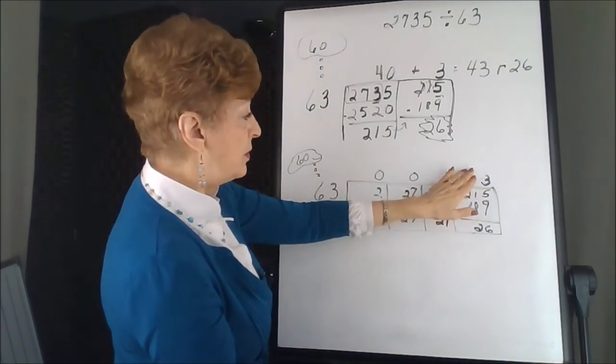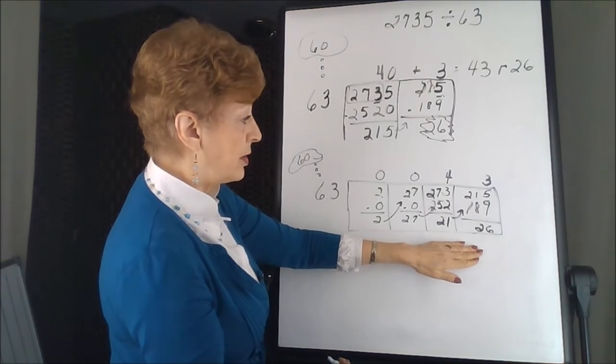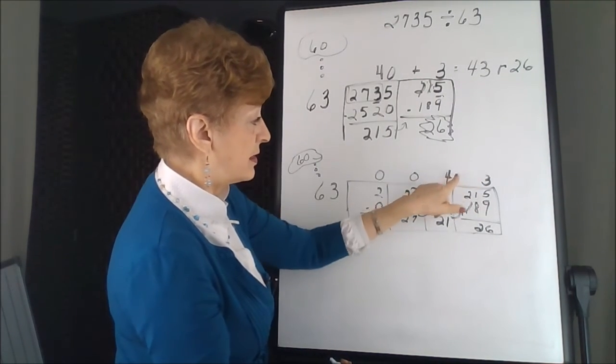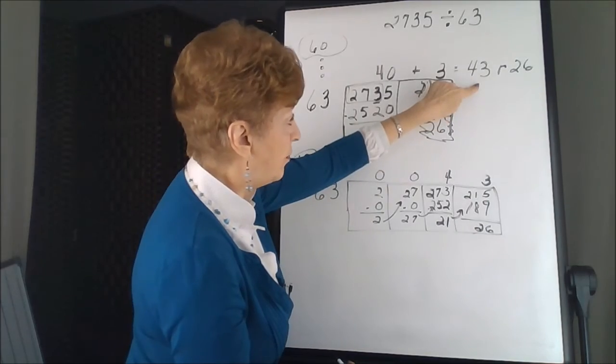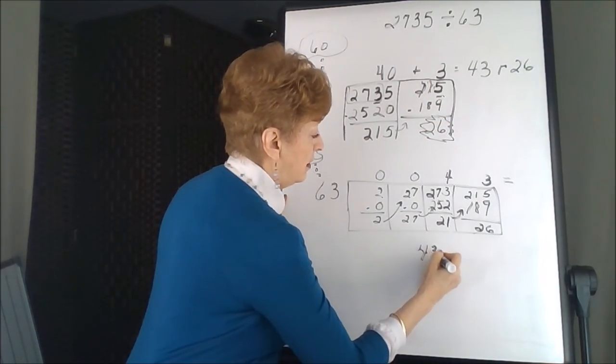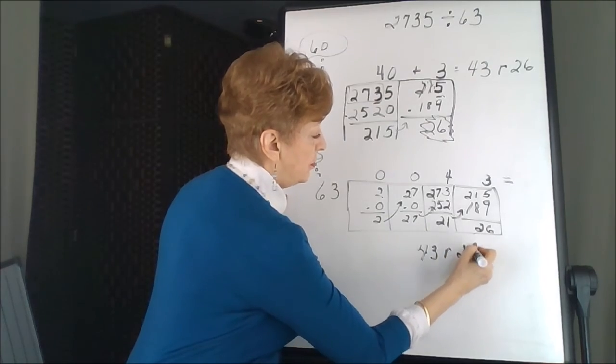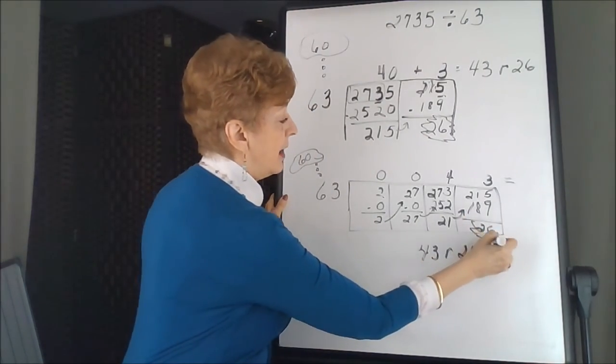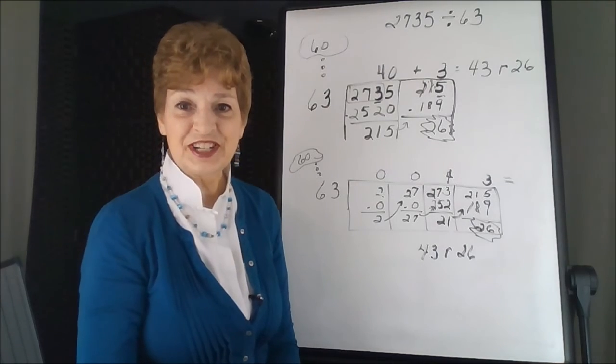In this case, we don't have to add any of the partial products. This tells us it's 43. The same 43 we got here. So this is equal to 43, remainder 26. Because that was too small to do any more division.